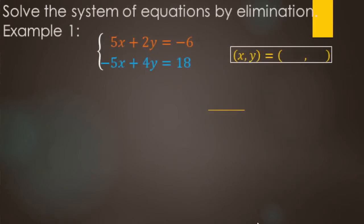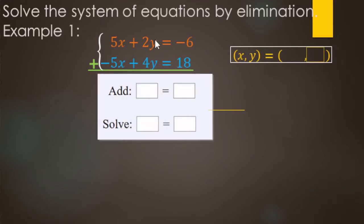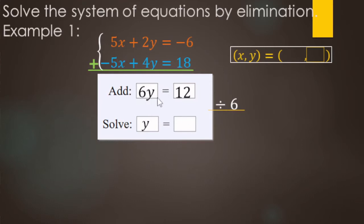We're going to solve this system of equations using elimination — adding both equations together to eliminate a variable. 5x minus 5x is 0x's, so we ignore that. Then 2y plus 4y makes 6y. For our addition step, negative 6 plus 18 makes 12. We're trying to get y by itself, so we undo the multiply by 6 with divide by 6. 6 divided by 6 is 1y, and 12 divided by 6 makes 2. Our value for y is 2.